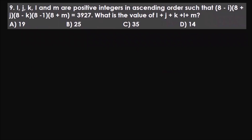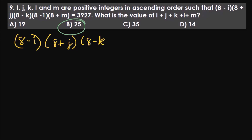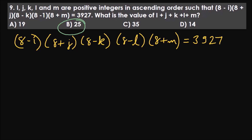Pause the video and try to solve it. The answer is B, 25. We have (8 − i)(8 + j)(8 − k)(8 − l)(8 + m) = 3927. One key observation: 3927 is an odd number. If the product is odd, then every single factor must be odd — because if even one factor were even, the entire product would be even.